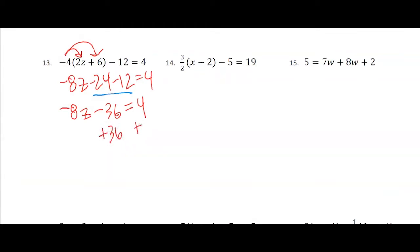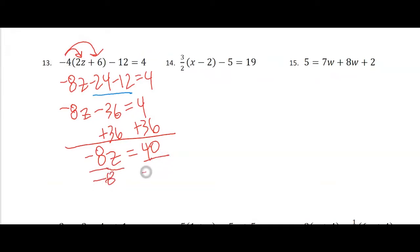Plus 36 on both sides. Divide both sides by negative 8 and get z equals — did anyone solve number 13? 40 divided by negative 8? Negative 5. Wow, that's embarrassing.